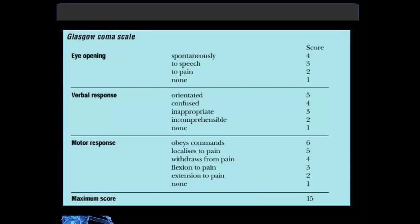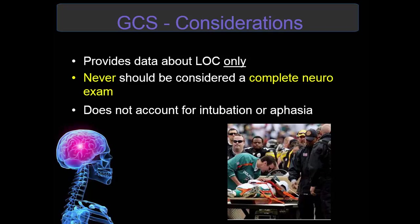For eye-opening: spontaneously scores a 4; no response scores a 1. For verbal response: oriented scores a 5; no response scores a 1. For motor response: obeying commands scores a 6; no response scores a 1 — with withdrawal from pain, localizing to pain, flexion, and extension as intermediate scores. You add up the numbers to get your total Glasgow Coma Scale score. It also does not account for patients who are intubated or aphasic and cannot speak.